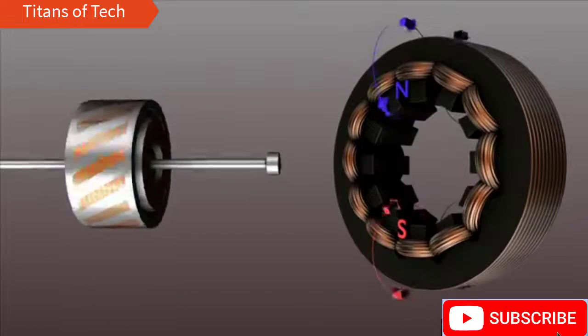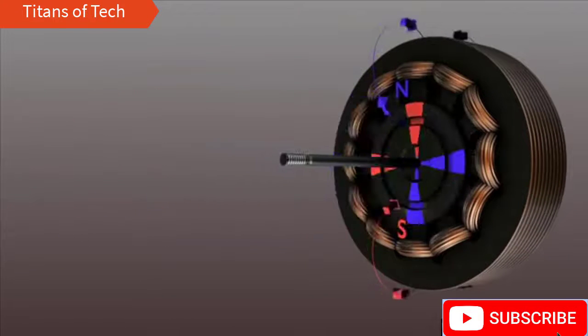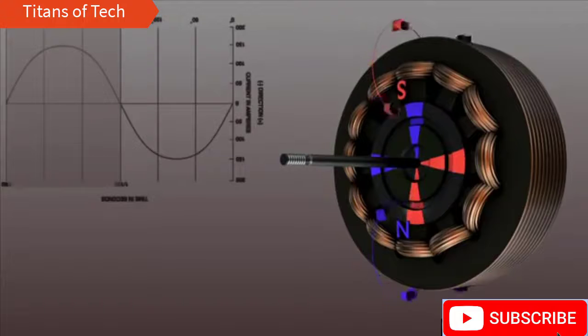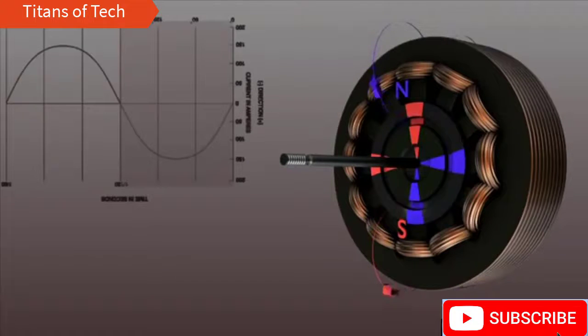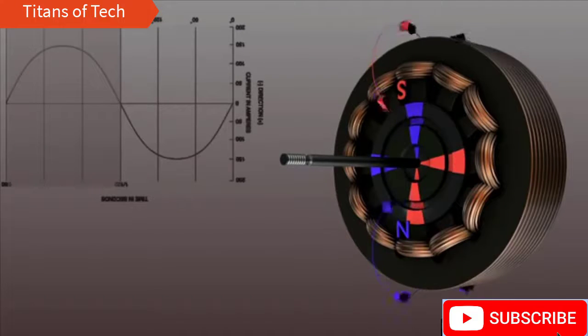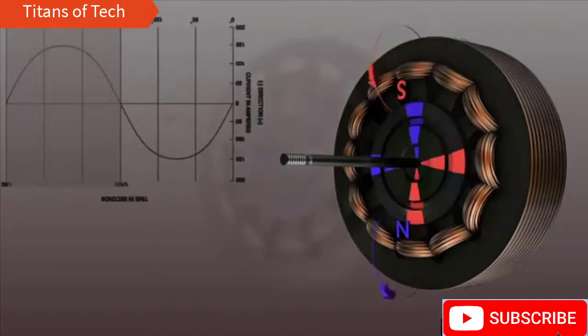As the magnetic field of the stator alternates due to the effect of the AC power supply, the induced magnetic field of the rotor will be attracted and will follow the rotation. It is a natural phenomenon which occurs when a conductor is moved through an existing magnetic field.